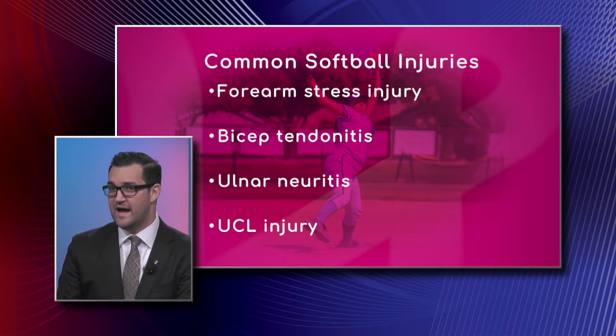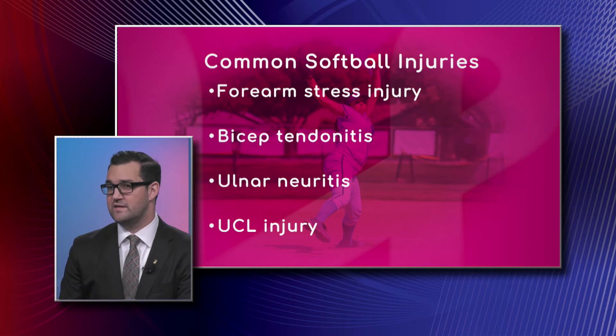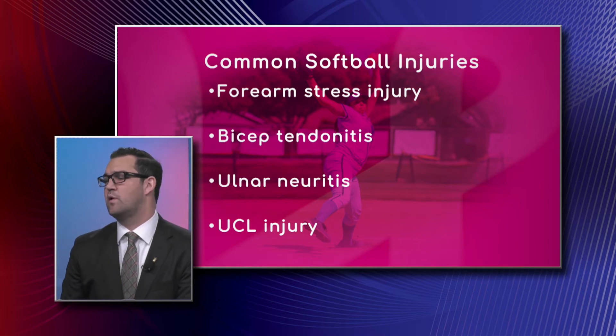Lastly, the UCL injury. This is one we see more in baseball or in fielders with the overhead throwing mechanism, and it can cause pain and stress on the ulnar collateral ligament on the medial aspect of the elbow.